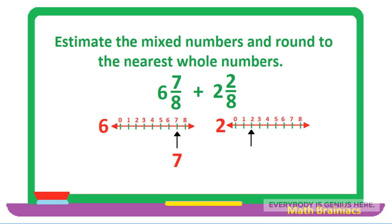Since 7 over 8 rounds up to 1, it gives us 6 plus 1, and the answer is 7. The second fraction is 2 over 8, so we point the arrow to number 2 on the number line. Number 2 is much closer to 0 than to 8, so 2 over 8 rounds down to 0. Accordingly, 2 plus 0 gives us 2. Therefore, 7 plus 2 gives us 9. It is easy, right!